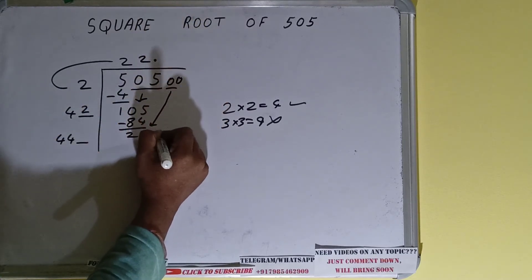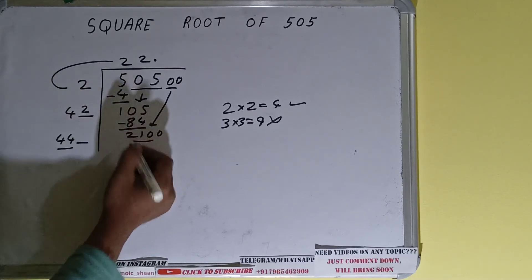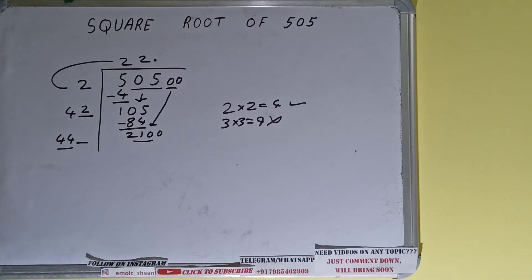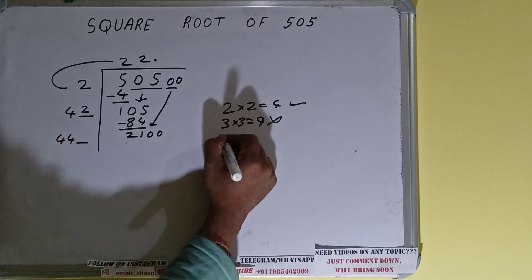So what we'll do is we'll put decimal. Once we put decimal we can bring down pair of zeros and number will become as 2100. So now you can compare this 44 with this 2100. So 44 times 5 is 220, so we cannot try five times. We have to try four times.